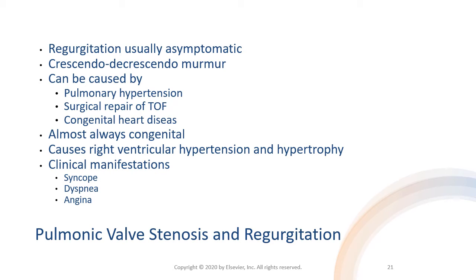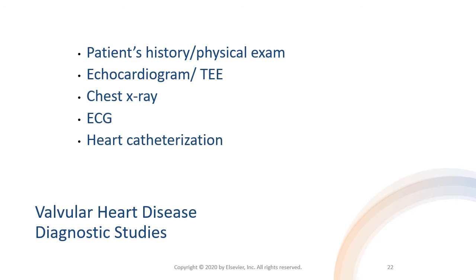Pulmonary stenosis is almost always a congenital part of tetralogy of Fallot. It results in right ventricular hypertension and hypertrophy and is largely asymptomatic. When symptoms develop, they are similar to those of aortic stenosis: syncope, dyspnea, and angina. Symptoms typically do not present until adulthood.